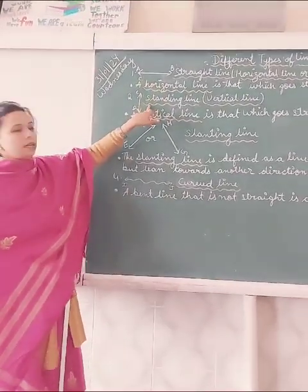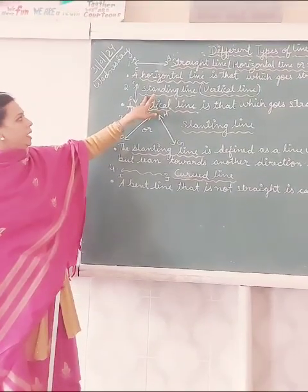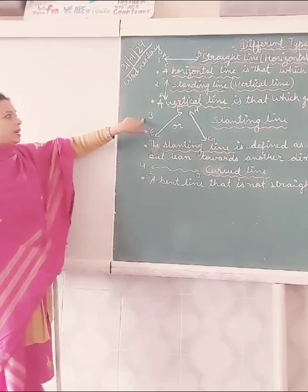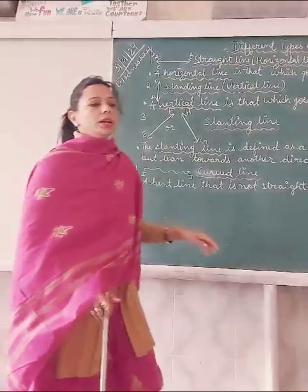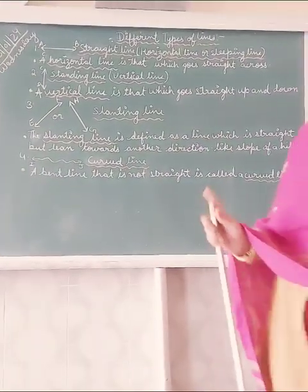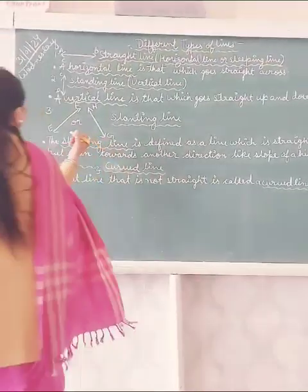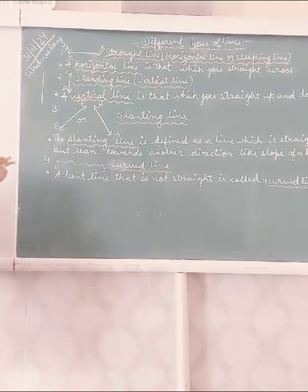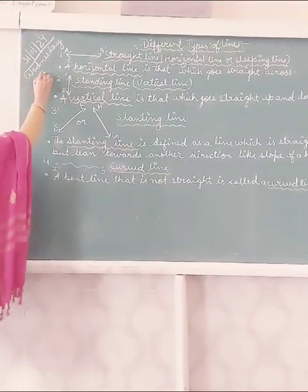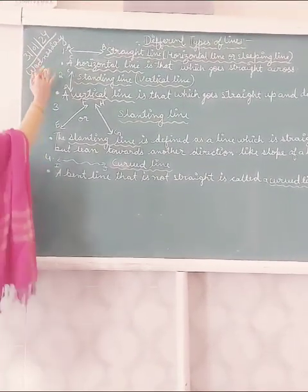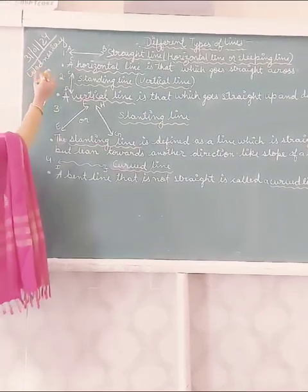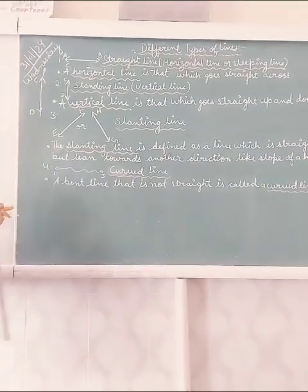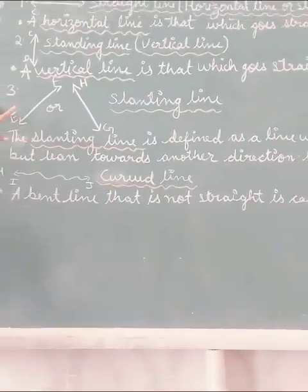The second line is the standing line. When you draw a line vertically, it is called a vertical line or standing line. When you draw a line like this, it is a standing line. You can also extend it from both sides, from point C to point D, wherever you want to extend it.